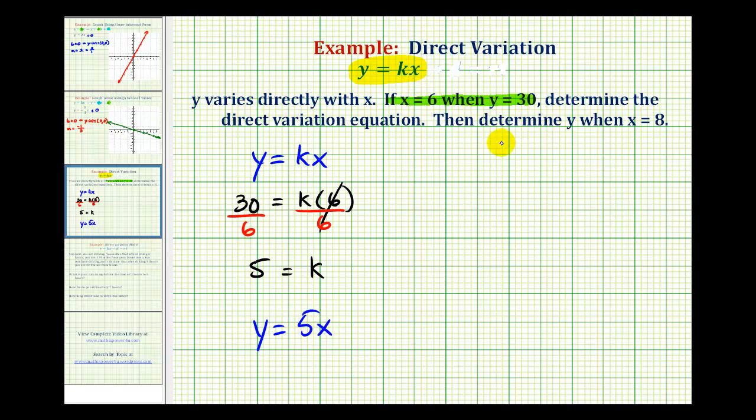This is the first part of the question. We now know our direct variation equation. The second part asks us to determine y when x equals 8. We can take our direct variation equation and substitute 8 for x. Using y equals 5 times x, we would have y equals 5 times 8, which is equal to 40.